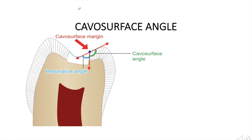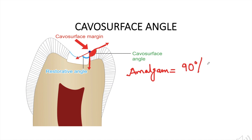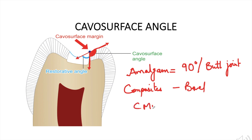Coming to the cavosurface angle — the angle formed between the prepared tooth surface and the external tooth surface is the cavosurface angle. The value of this angle varies according to different restorative materials. For amalgam, which has low tensile strength and is brittle, we need bulk of material at margins, so the cavosurface angle is 90 degrees or butt joint. For composites, a bevel is indicated because it increases the area for bonding. For cast metal restorations, a bevel is indicated because it helps in better marginal sealing.